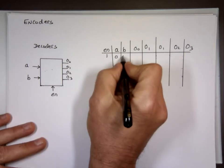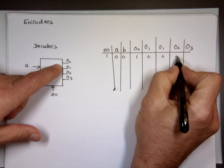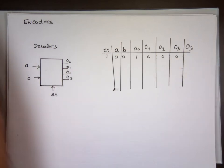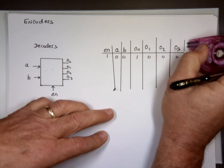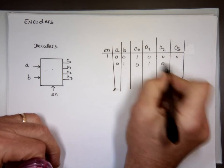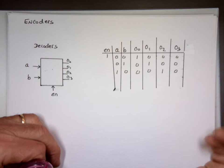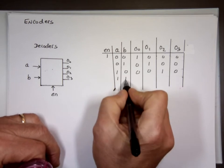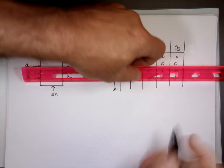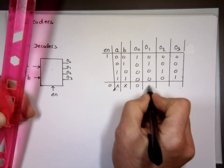If A and B are both 0, that pin is going to be high and the rest are going to be low. If it's 0,1 — only pin 1 is going to be on, and the rest will be low. If it's 1,0 — that's 2 — pin 2 is on and the rest are off. If you get 1,1 — that's 3 — the others are off and pin 3 is on. If the chip enable is 0, it doesn't matter what these are — your output is going to be 0, none of them will be on.